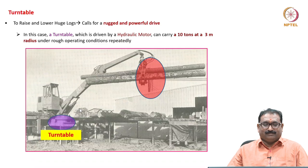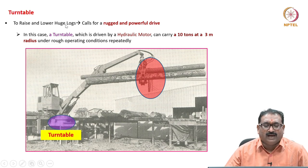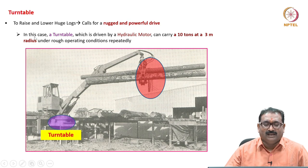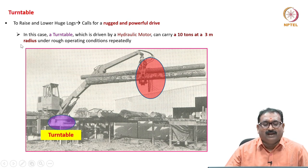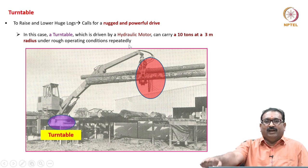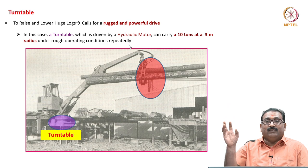Next, I will show one more application: the turntable. This is a turntable used to raise and lower huge loads, which calls for a rugged and powerful drive. In this case, a turntable driven by a hydraulic motor can carry 10 tons at a 3-meter radius under rough operating conditions repeatedly. It will lift the load of 10 tons and move it around 3 meters very easily and very quickly.